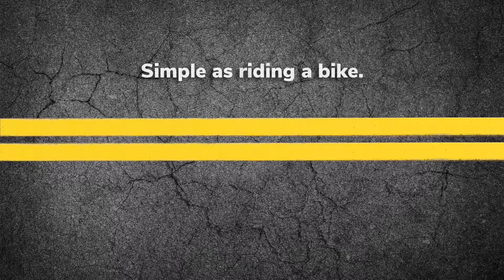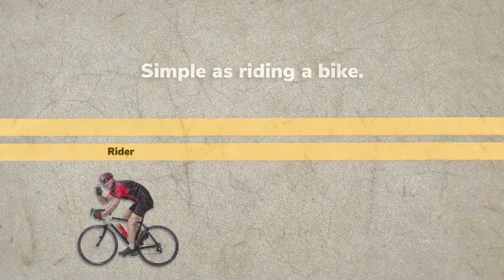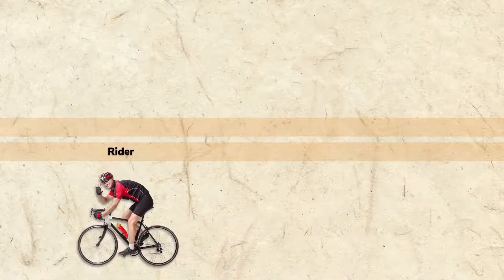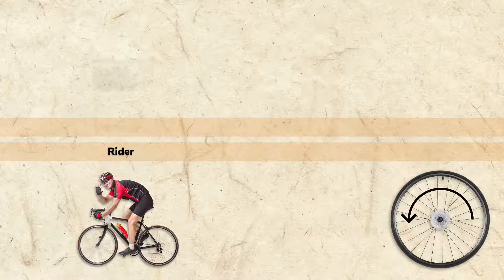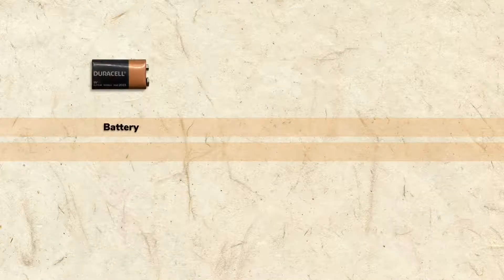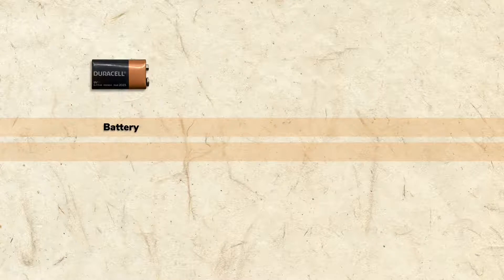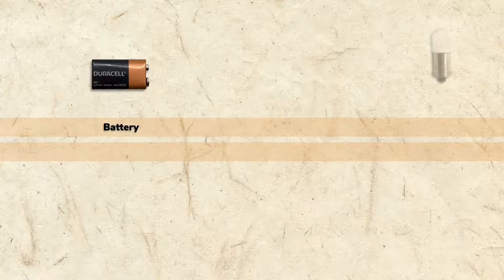It's actually pretty simple. A bicycle rider has stored energy, which can be used to turn a bike wheel. A battery has stored energy, which can be used to turn on an electrical device such as a bulb.